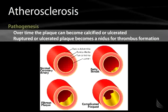Over time, the plaque can become calcified and ulcerated, and a ruptured or ulcerated plaque becomes a nidus for thrombus formation.